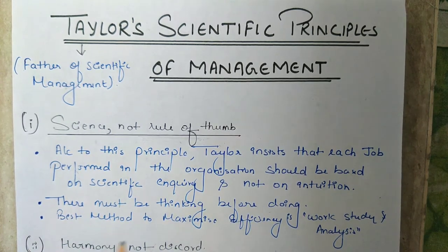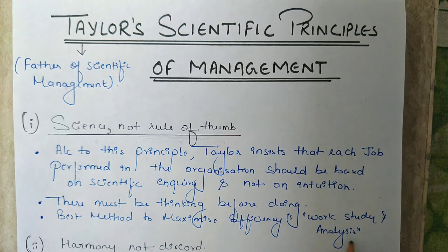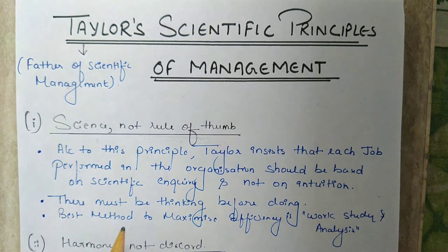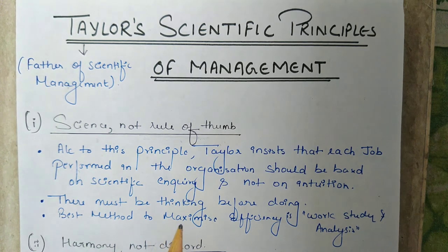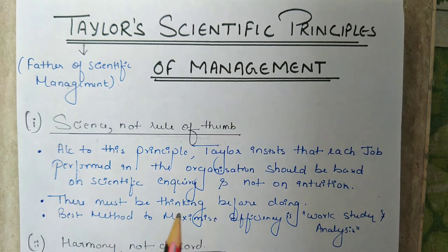According to Taylor, there is only one best method to maximize efficiency, and this method can be developed through work study and analysis. The methods developed should be a substitution of rule of thumb. For example, in rule of thumb the standard time required to do a particular job is decided by the manager on the basis of his past experience. But Taylor insists that standard time for a job should be set up scientifically by performing time study in the organization.